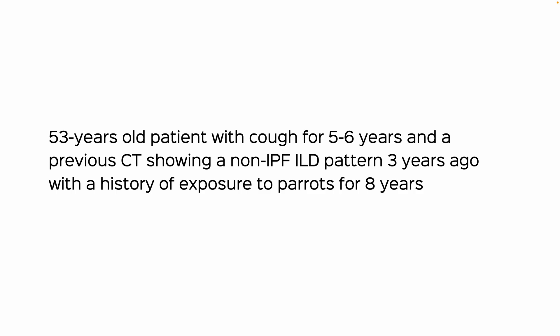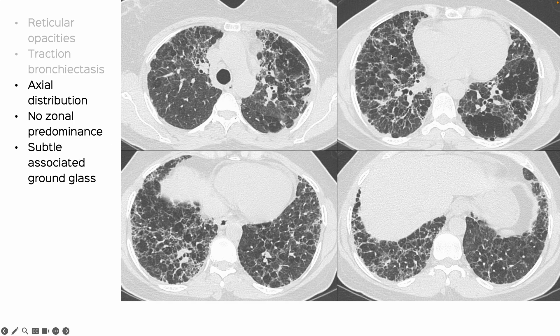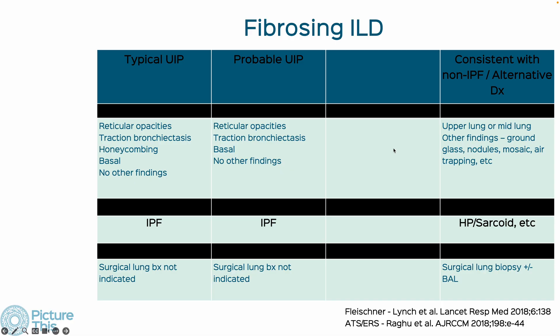The patient is a 53-year-old with a cough for five to six years. A previous CT three years ago in 2022 showed a non-IPF ILD pattern, with a history of exposure to parrots for eight years. We see reticular opacities, traction bronchiectasis, and no obvious honeycombing — consistent with a fibrosing ILD. There is axial distribution, no significant zonal predominance, and subtle areas of ground glass. Using the four-bucket categorization of fibrosing ILD, this fits into the non-IPF or alternate diagnosis category.